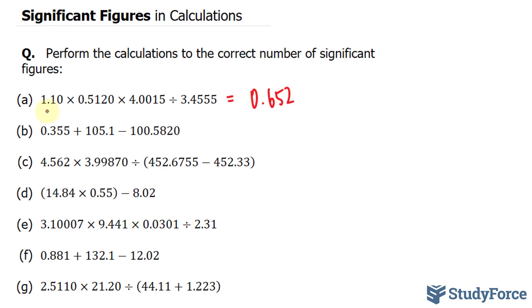In the next question, we have to add and subtract these three numbers. When it comes to adding and subtracting, you have to take into account the number with the least number of decimal places. So since this number has three decimal places, this has one and this has four,